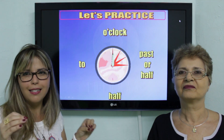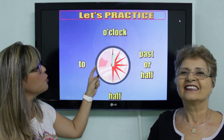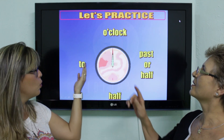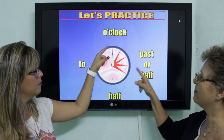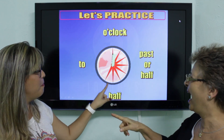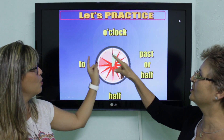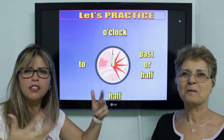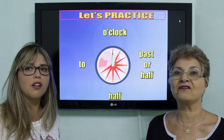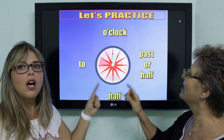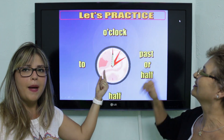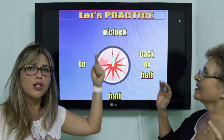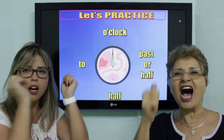Esse relógio eu adoro fazer em sala de aula porque a gente tem que acelerar. A gente tem que ter o ritmo deles. Lembrando: essa primeira meia hora é past or after. O'clock, five past, ten past, a quarter past, twenty past, twenty-five past, half past, twenty-five to, twenty to, a quarter to, ten to, five to — o'clock. Let's repeat once more: o'clock, five past, ten past, a quarter past, twenty past, twenty-five past, half past, twenty-five to, twenty to, a quarter to, ten to, five to — o'clock. Perfect, very good.